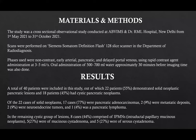A total of 40 patients were included, out of which 55% demonstrated solid pancreatic lesions and 45% had cystic pancreatic neoplasms. Out of the solid neoplasms, 77% were pancreatic adenocarcinomas, 9% were metastatic deposits, 9% were neuroendocrine tumors, and one case was pancreatic lymphoma. In the remaining cystic group, 44% comprised of IPMNs, 27% comprised of mucinous cystadenomas, and another 27% were serous cystadenomas.